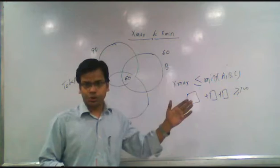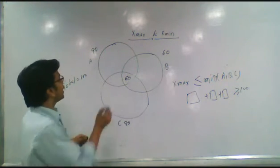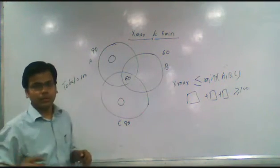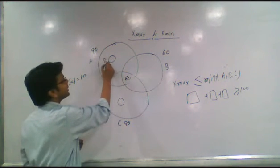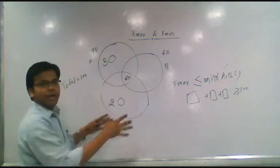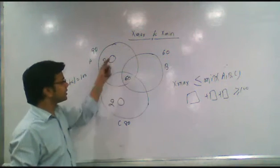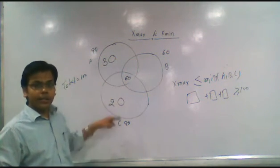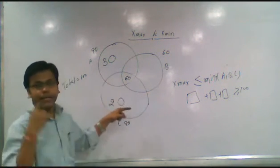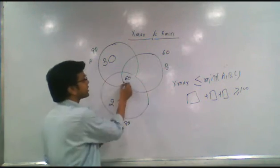In this question, the minimum value is 60, so we place 60 in the all-three intersection. The remaining only-two values for the larger sets become 30 and 20, making up 80 and 90 respectively. The summation of all three regions — 60, 30, and 20 — is 110, which is greater than 100. So the x maxima is 60.